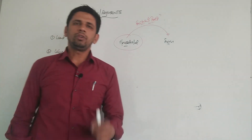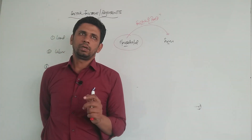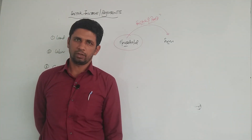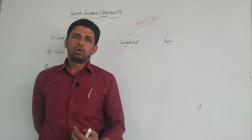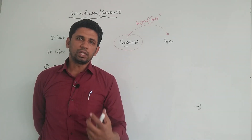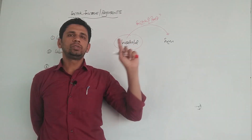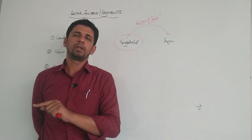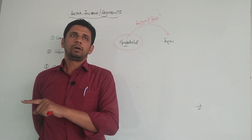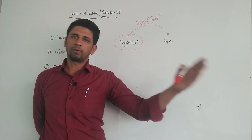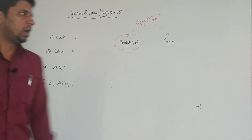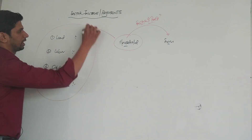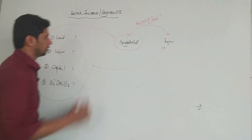Because without using the factors of production, it is not possible to produce goods and services in the economy. So the firm sector has to take all the factors of production from the household sector. The household sector provides four factors of production to the firm sector.